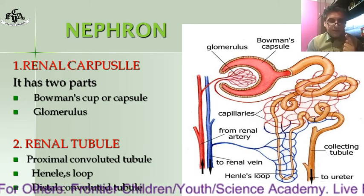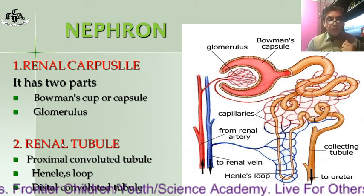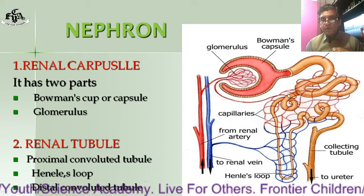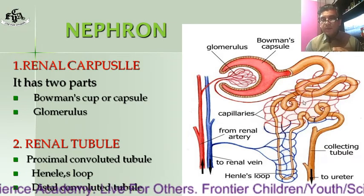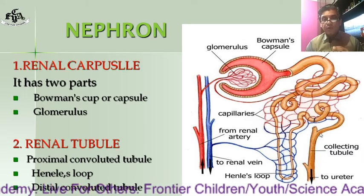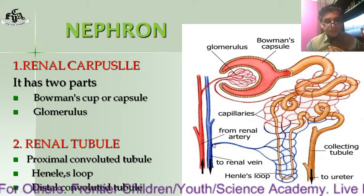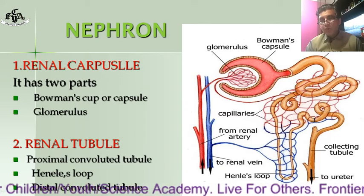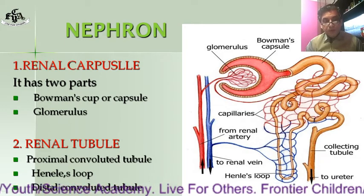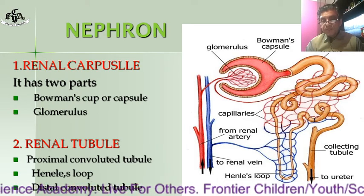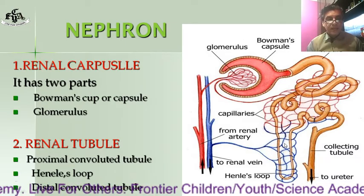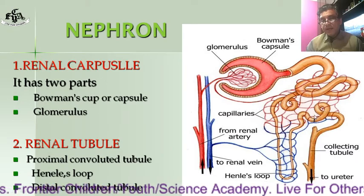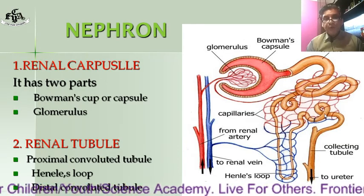The second part of the nephron is the renal tubule — the tubular part. As shown in the diagram, it starts from the end of the Bowman's capsule. The renal tubule is divided into three portions: the proximal convoluted tubule (the first coiled part), the loop of Henle (the U-shaped middle portion), and the distal convoluted tubule (the last coiled part).